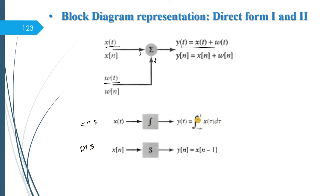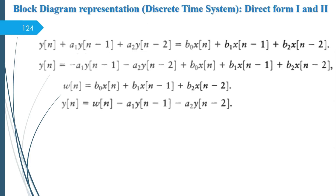The third operation is integration for CTS and shifting for discrete time. For continuous time: y(t) = integral from minus infinity to t of x(τ)dτ. For discrete time, it is a shift operator — S^1 means shift the input by one time to the right, giving x(n-1). If it is S^(-1), shift to the left. These three operations are what we perform on the system.